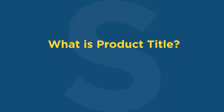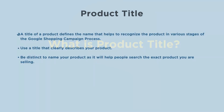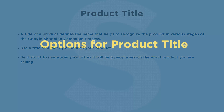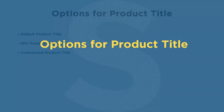Titles are one of the most important factors that can affect the performance of your shopping campaigns. A product title defines the name that helps to recognize the product in various stages of the Google Shopping campaign process. Use a title that clearly describes your product and is distinct, as it will help people search for the exact product you are selling.